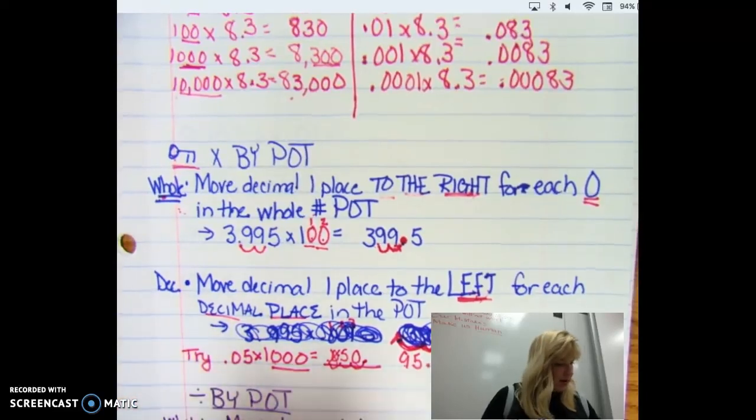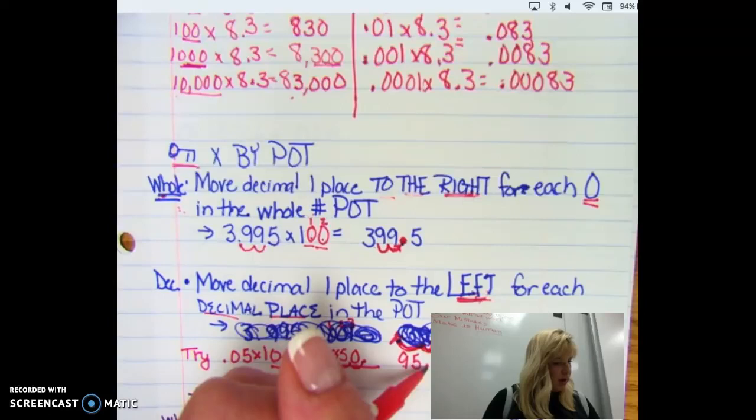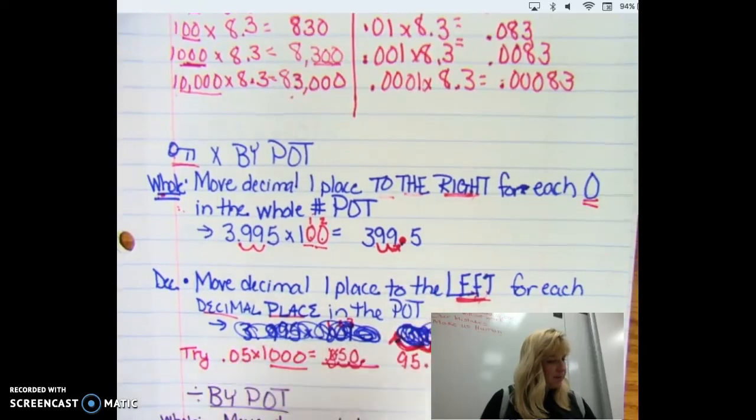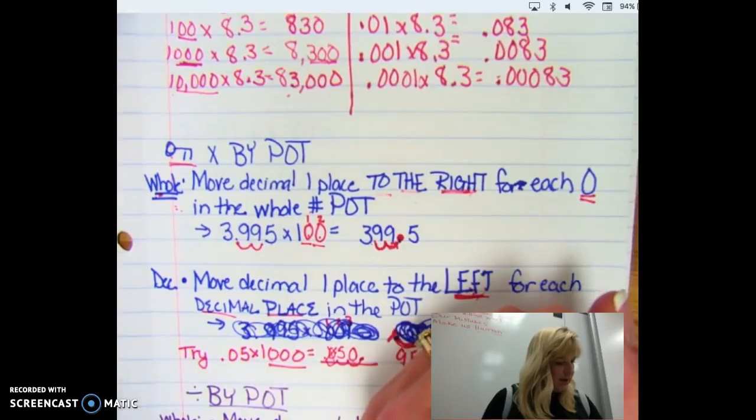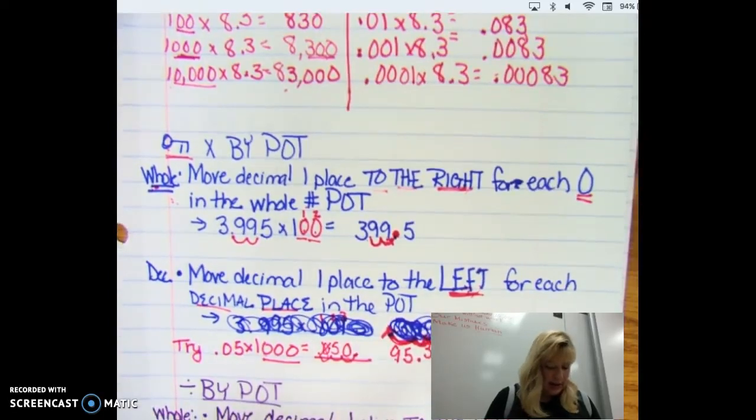The next one, 95.38 times 0.0001, we are going to end up moving it to the left. And how many places? One, two, three, four. So I know I'm going to the left. I'm going to put my 95.38. I'll start it where it started here, but go one, two, three, four. And I need to put my placeholder zeros in there. And so there is your number for that one.